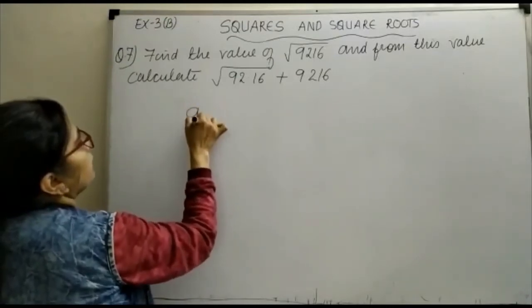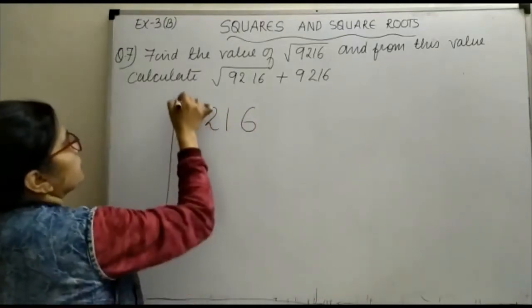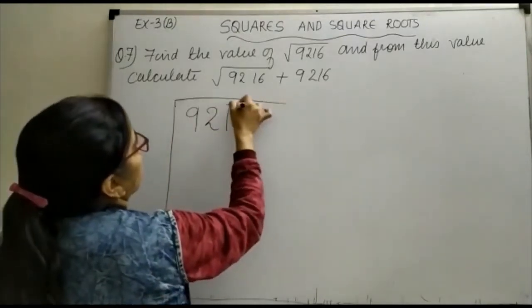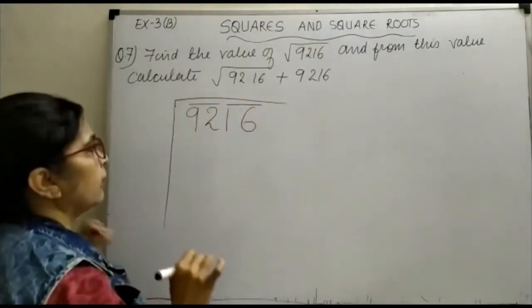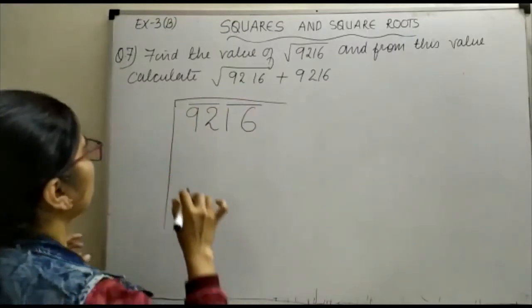This is your 9216. Just like we do it, first we have to pair it from the right-hand side. Take a number whose square is less than 92. Obviously it will be 9.